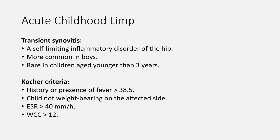The diagnosis of transient synovitis is one of exclusion. The Kocher criteria is a useful tool in differentiating septic arthritis from transient synovitis. Kocher criteria include: history or presence of fever greater than 38.5°C, child not weight bearing on the affected side, ESR greater than 40 mm/hour, and white cell count greater than 12. The absence of these criteria means the diagnosis is mostly transient synovitis.